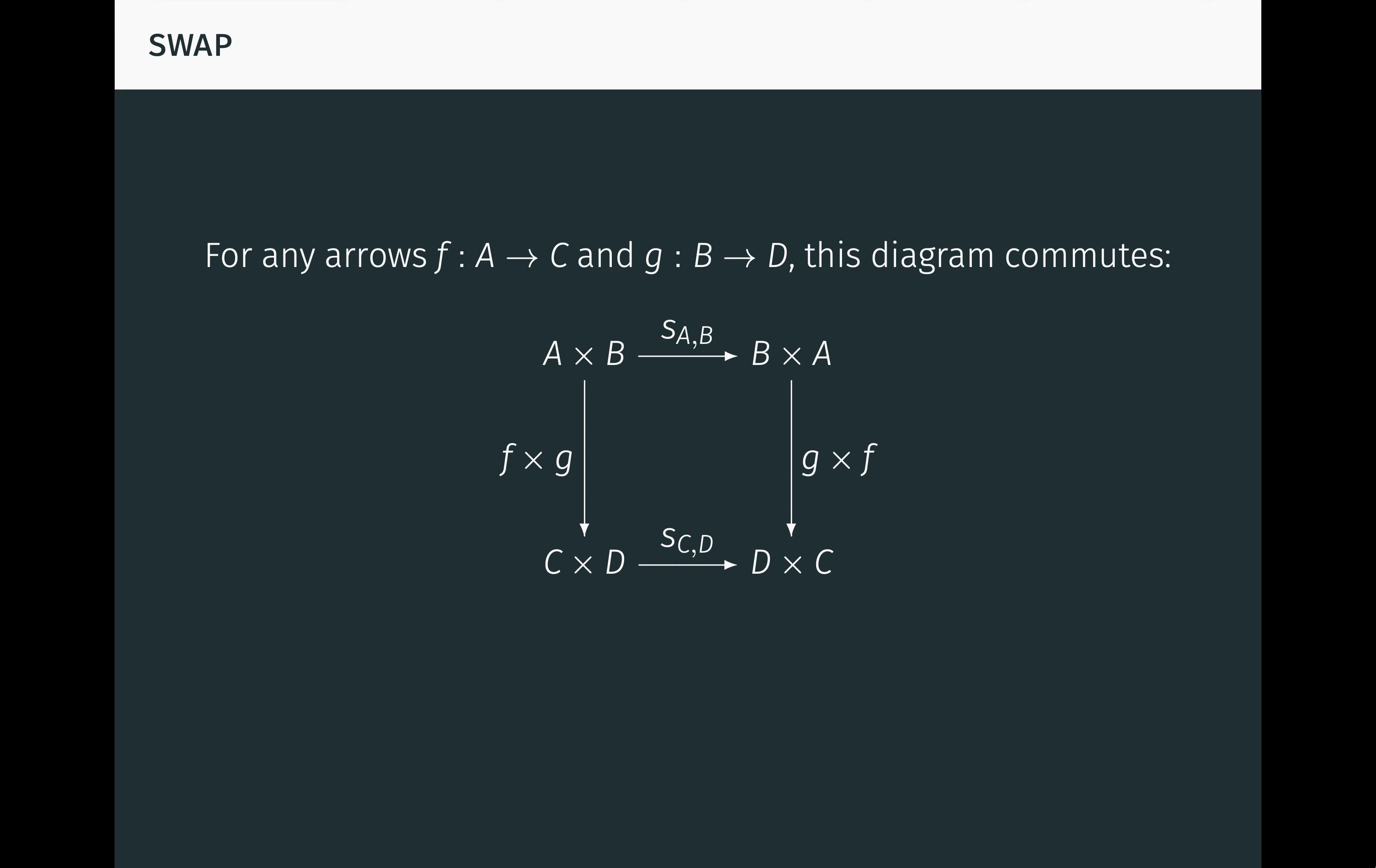On the left, f times g, which is just the pairing of the composites of f and g with the projection arrows, maps from A times B to C times D. And on the right, g times f similarly maps from B times A to D times C.